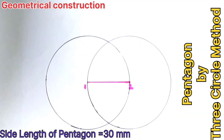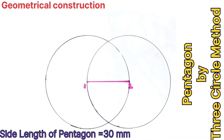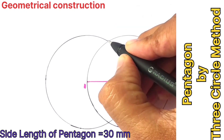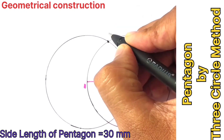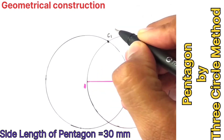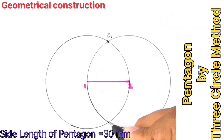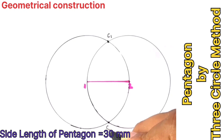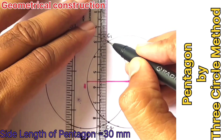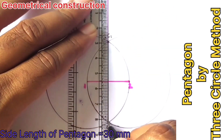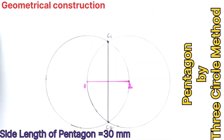These two circles intersect at a point above and below the line. Mark these points as C1 and C2. Next, join C1 and C2 with a straight line.